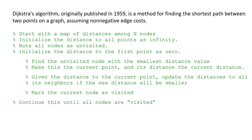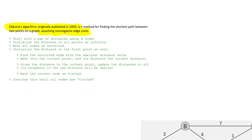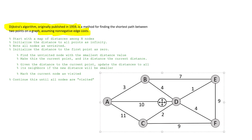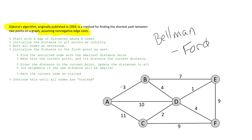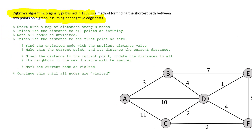We're going to do Dijkstra's algorithm by hand first and make sure we understand it, then we'll do it on an actual example. It's really cool — it was published by Dijkstra in 1959. The biggest thing is that it has to have non-negative costs on your map. If it had a negative sign we'd have to use Bellman-Ford, which is a lot more expensive computationally. Dijkstra's is my favorite pathfinding algorithm.